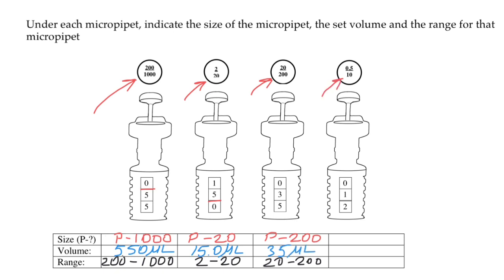The last micropipette is P10. The range is between 0.5 microliters and 10 microliters. Hence, what we see here cannot be 12 because the range is between 0.5 and 10.